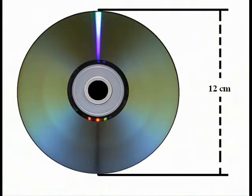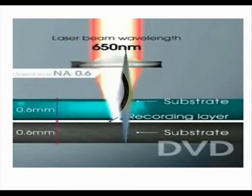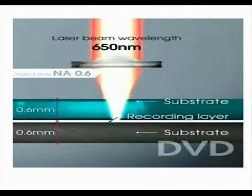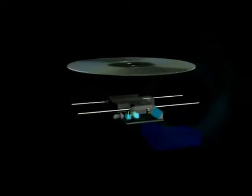DVD was developed in 1996. DVD is an improvement over CD while using the same size — 12 cm in diameter. It is an optical disk used to record data such as movies, giving good quality picture and sound. A DVD can contain 4.7 GB of data.